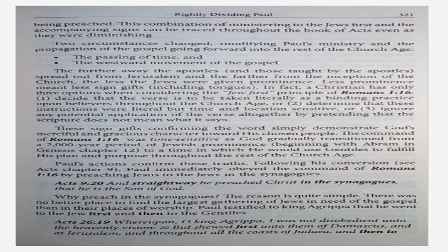Tongues were expressly performed for a sign to overcome the Jews' unwillingness to accept God's spokesman. 1 Corinthians 14:22 — wherefore tongues are for a sign, not to them that believe, but to them that believe not. The signs followed the apostle Paul through his missionary journeys. However, they did not continue to the end of his ministry, nor did they continue with anyone beyond the first century. While God offered the gospel to the Jew first, these signs served as a confirmation of the message being preached. This combination of ministering to the Jews first and the accompanying signs can be traced throughout the book of Acts, even as they were diminishing. Two circumstances changed, modifying Paul's ministry and the propagation of the gospel going forward in the rest of the church age: number one, the passing of time, and two, the westward movement of the gospel. The further away the apostles and those taught by the apostles spread out from Jerusalem, and the farther from the inception of the church, the less the Jews were given prominence. Less prominence meant less sign gifts, including tongues.